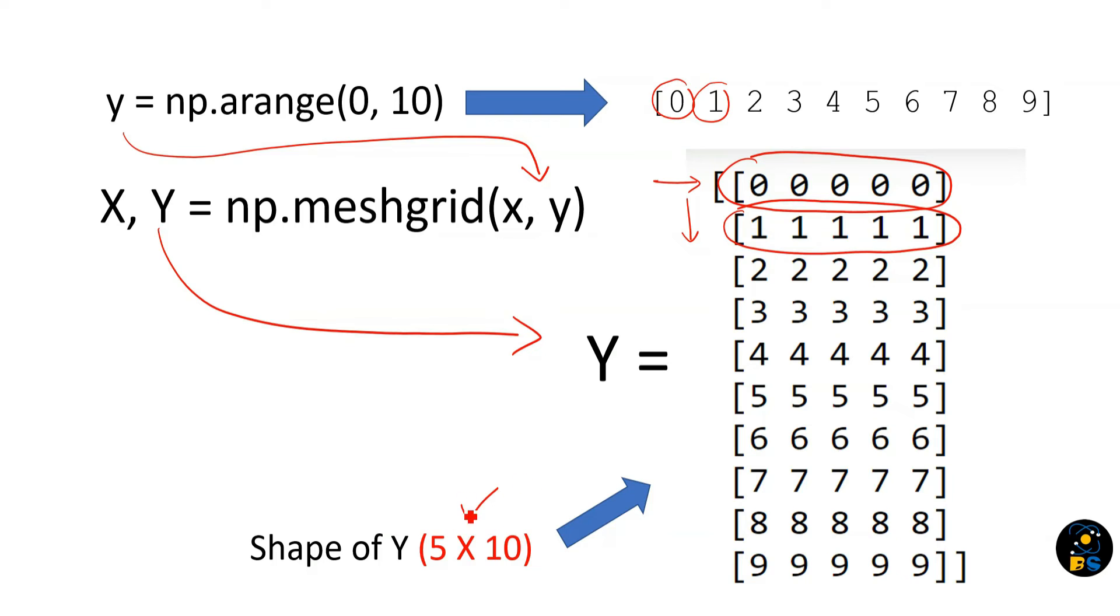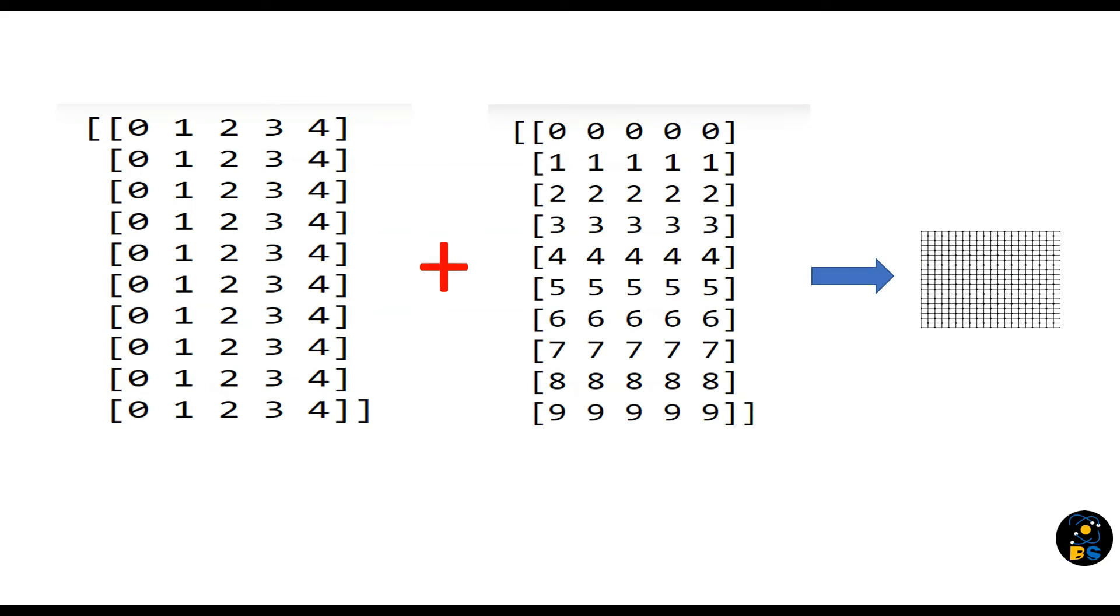The shape of Y is also 5 by 10, which helps create a grid because both matrices have the same dimensions. Combining these two matrices provides a grid which is the combination of every element of each of them. Now let's come to the code.